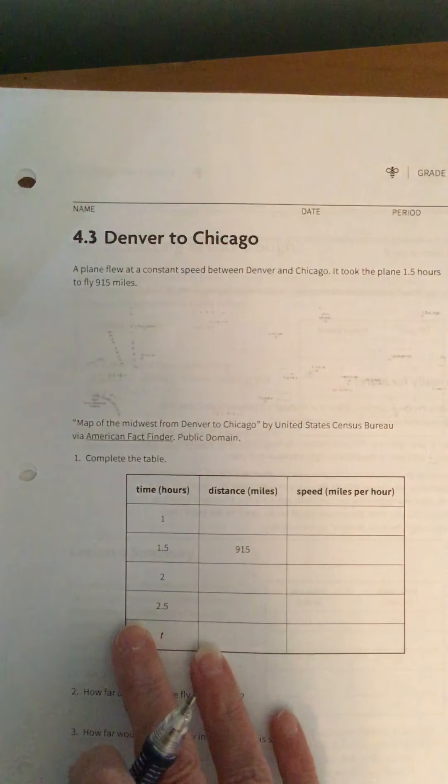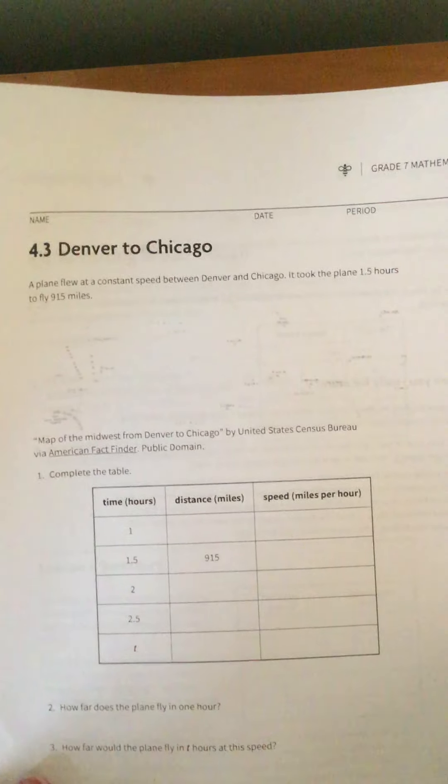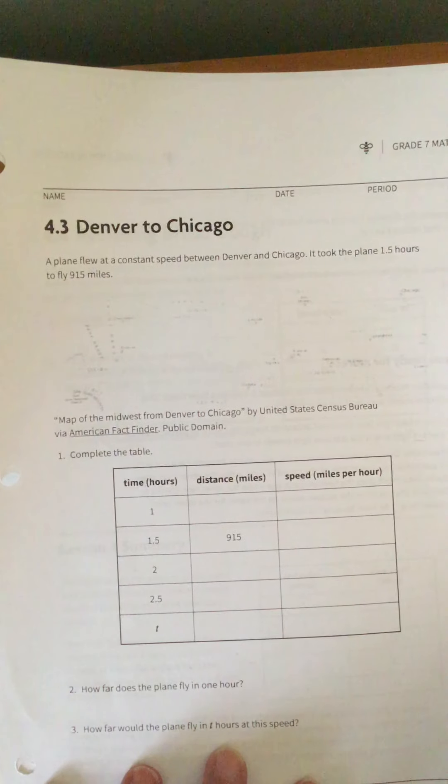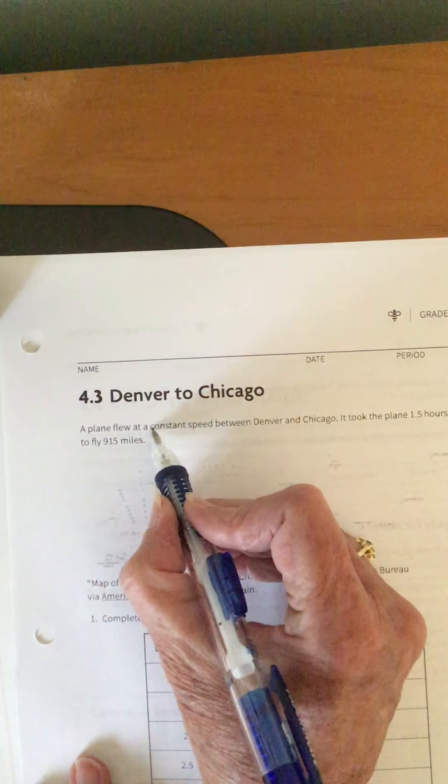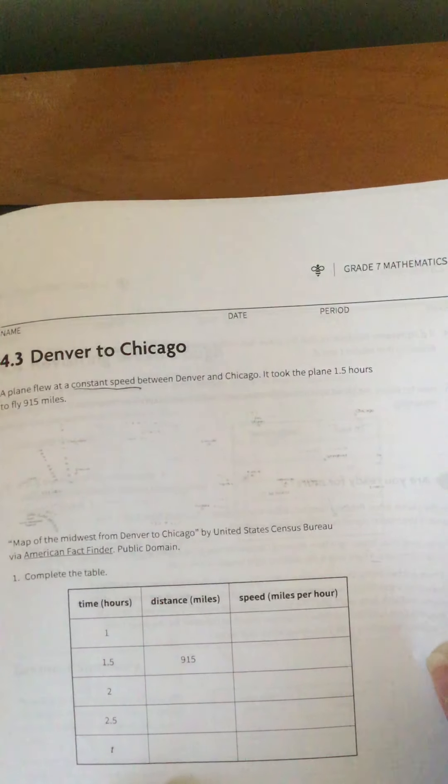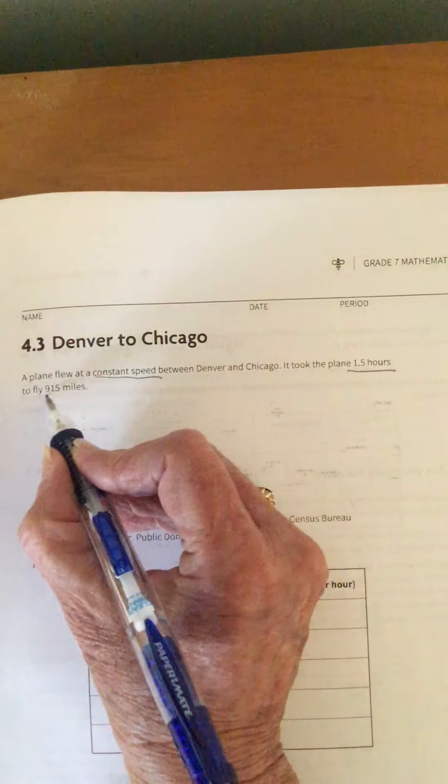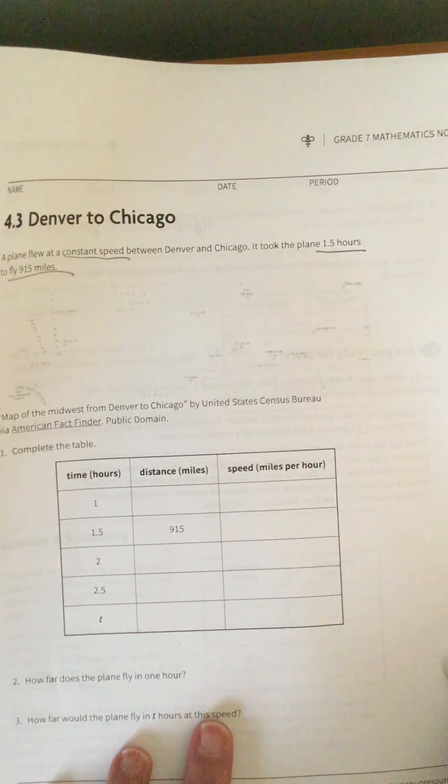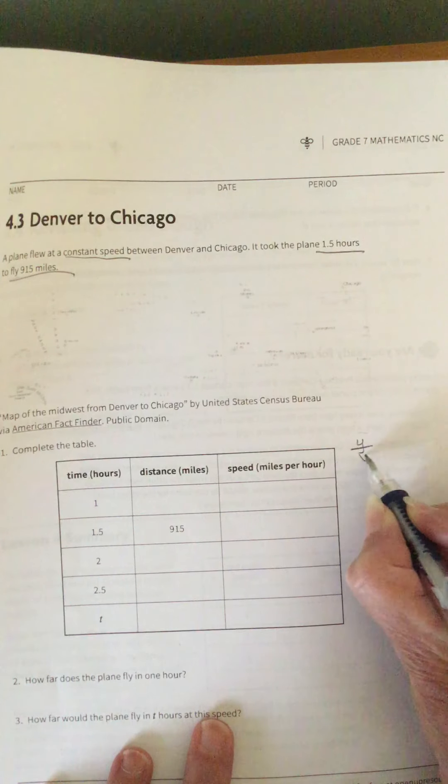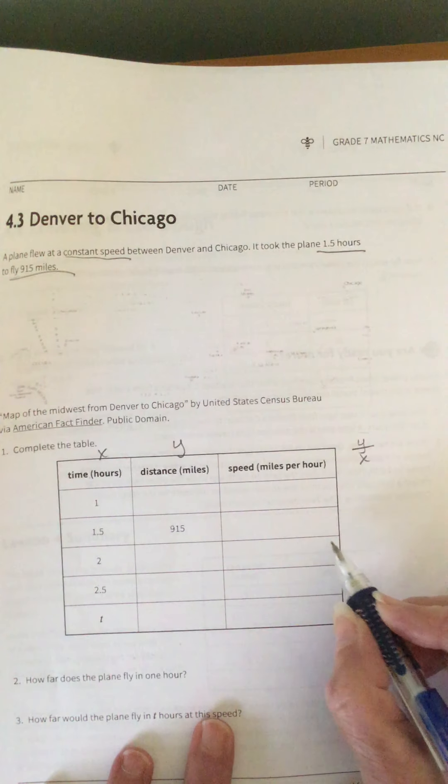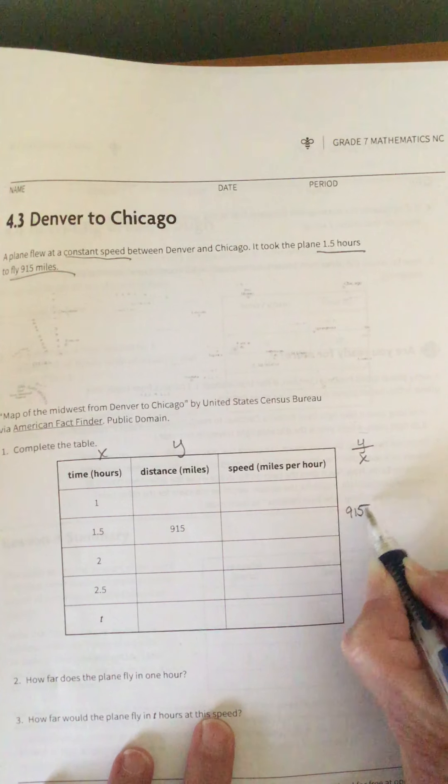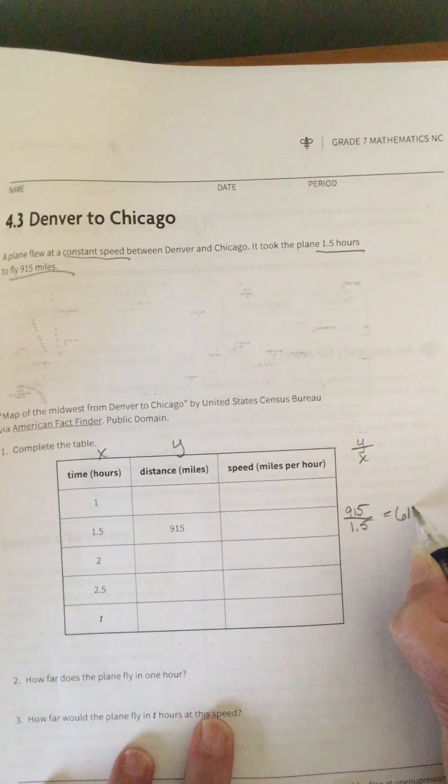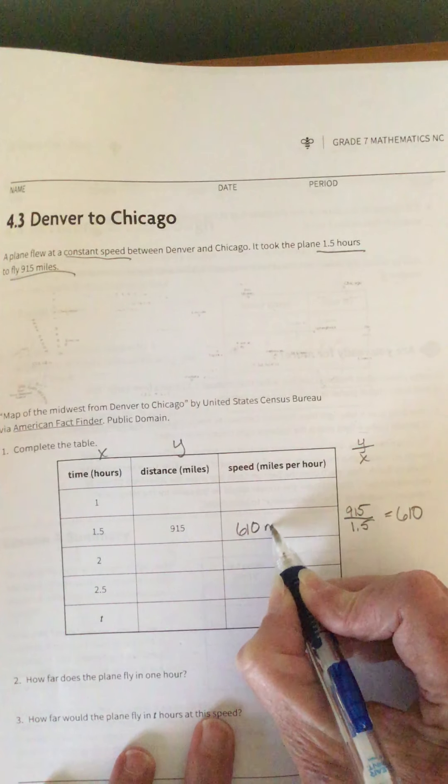Alright. So now we're going to do Denver to Chicago. Picture didn't come out real good, but you're going to be looking at it on your iPad, so you should be good. Alright. So they want us to complete the table, and it says a plane flew at a constant speed. So that tells us we have a proportional relationship. It took the plane 1.5 hours to fly 915 miles. It looks like they want us to find the speed, which is miles per hour. So we're going to use that same Y over X. So we're going to take 915 divided by 1.5. And when we take out our calculator and do that, we get 610.